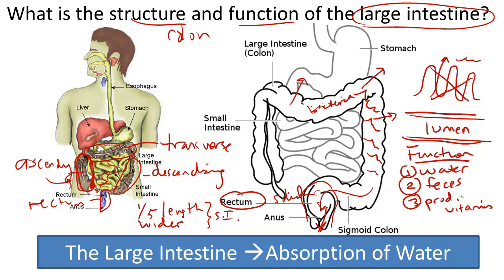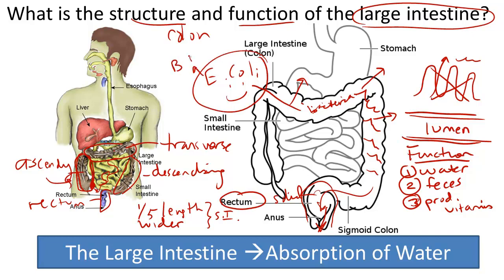The third function: a lot of friendly bacteria live in the large intestine. These are called E. coli. E. coli bacteria produce B vitamins, vitamin K, and folic acid, or folate. These vitamins are essential to nervous system function and other functions in the body.